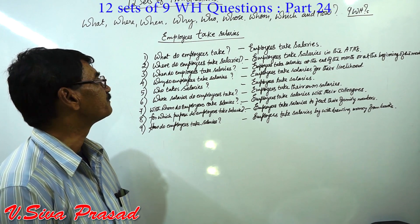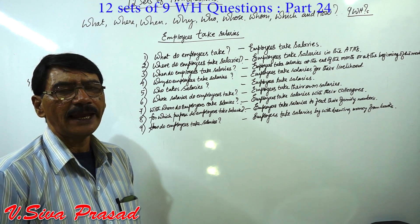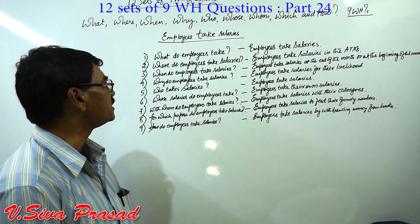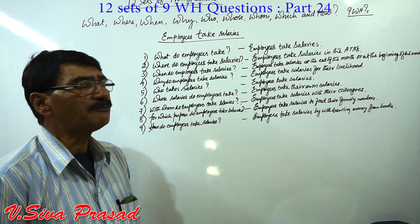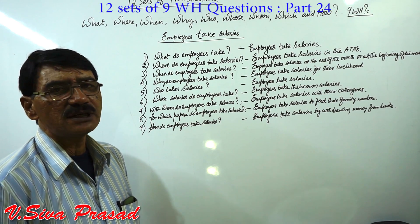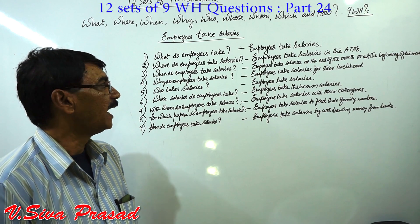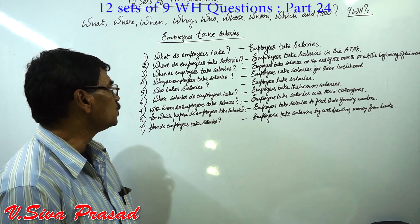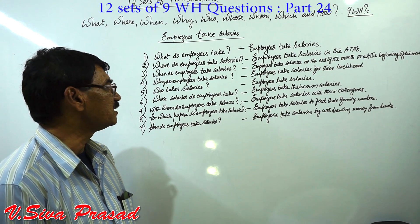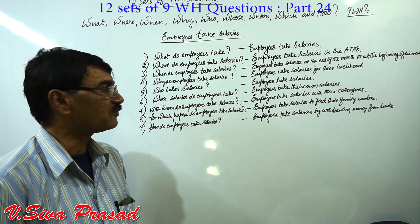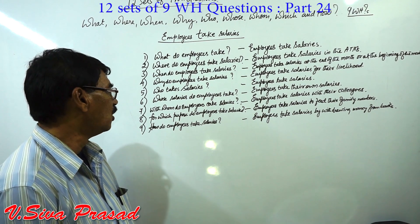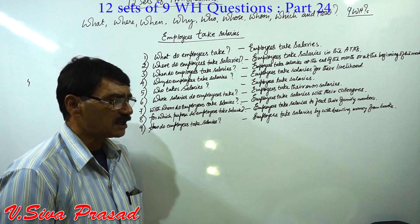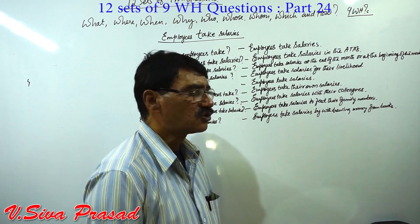Set 12 — Future Perfect Continuous: What will employees have been taking? Employees will have been taking salaries. Where will employees have been taking salaries? Employees will have been taking salaries in the ATMs. When will employees have been taking salaries? Employees will have been taking salaries at the end of the month or at the beginning of the month. Why will employees have been taking salaries? Employees will have been taking salaries by withdrawing money from banks.